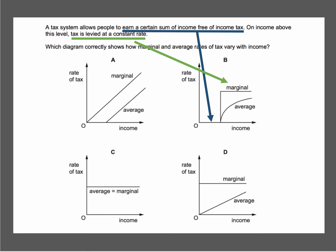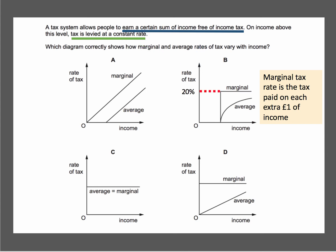Thereafter, tax is levied at a constant rate. The marginal rate of tax is simply the tax you pay on each extra one pound or one dollar of income, and that rate is constant. For example, let's assume that the marginal rate of tax is 20%.